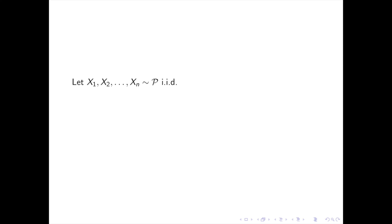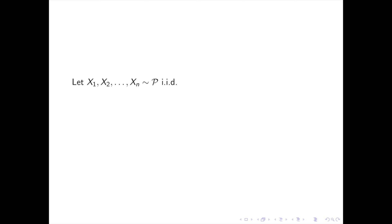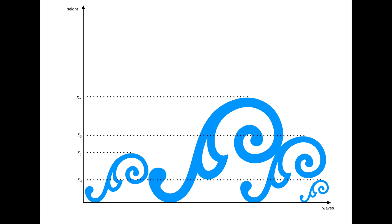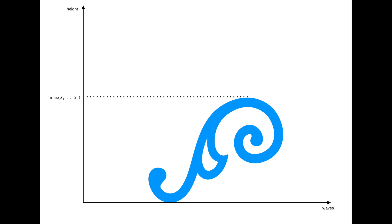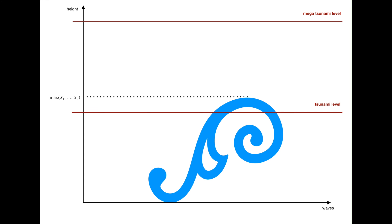Now, why the Fréchet distribution and not something else? This is not really included in the paper, but since the choice of the Fréchet distribution is the main topic, it may be interesting to give the intuition behind it. The answer lies in the theory of extreme values. Given a sequence of IID random variables x1, x2, …, xn, extreme value theory is interested in the distribution of the maximum. There are many applications, especially in finance and earth sciences — for example, evaluating the risk of a tsunami: if there is a tsunami at all, it will be the highest wave, so studying the distribution of the maximum gives information about that risk.